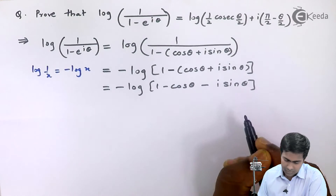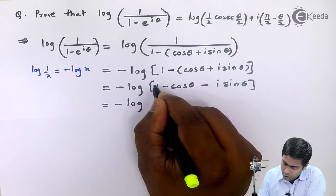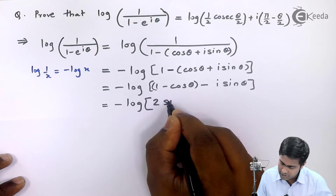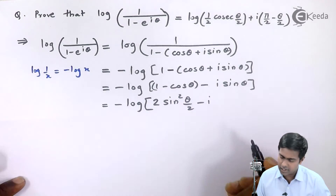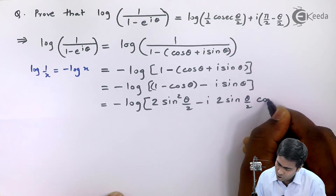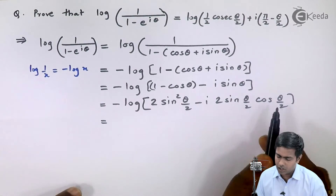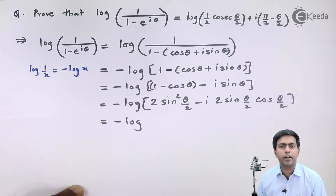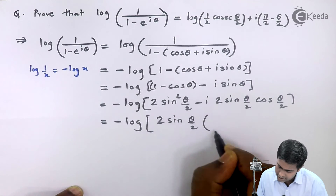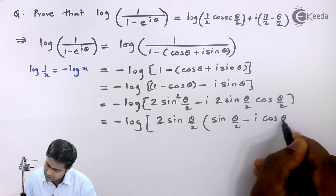Now we apply the trigonometric identities: 1 minus cos(θ) equals 2·sin²(θ/2), and sin(θ) equals 2·sin(θ/2)·cos(θ/2). From these two terms we can take 2·sin(θ/2) common, so this becomes minus log of 2·sin(θ/2) times the bracket sin(θ/2) minus i·cos(θ/2).